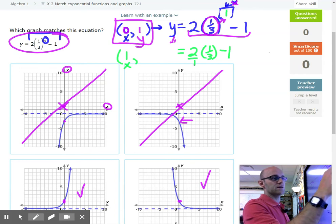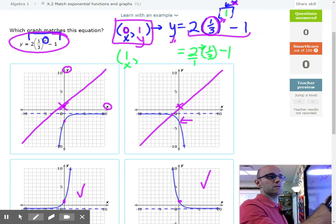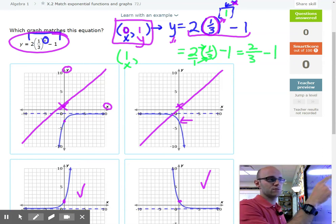2 times 1 third. I'm going to take top times top, 2 times 1, and get a 2. 1 times 3 on the bottom, that's going to give me a 3. So now I have 2 thirds. 2 times 1 third became 2 thirds. 2 thirds minus 1.